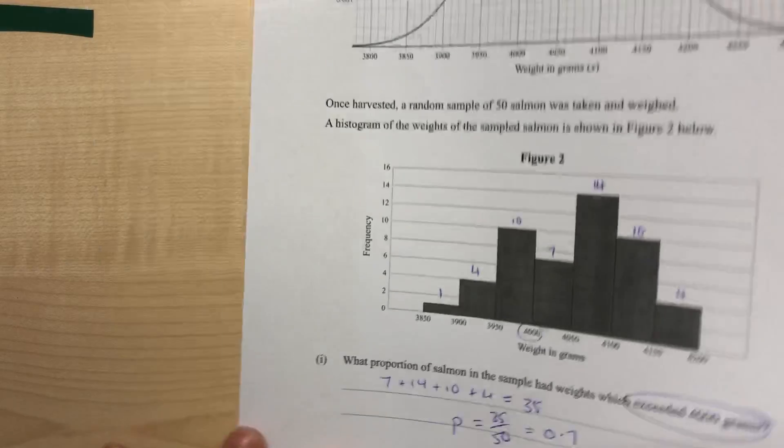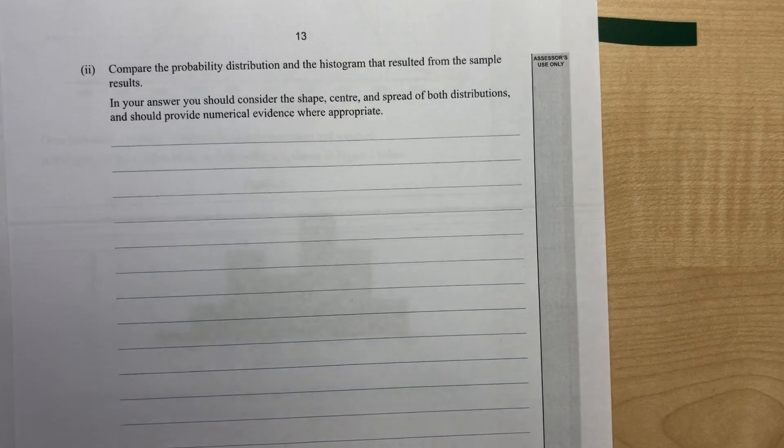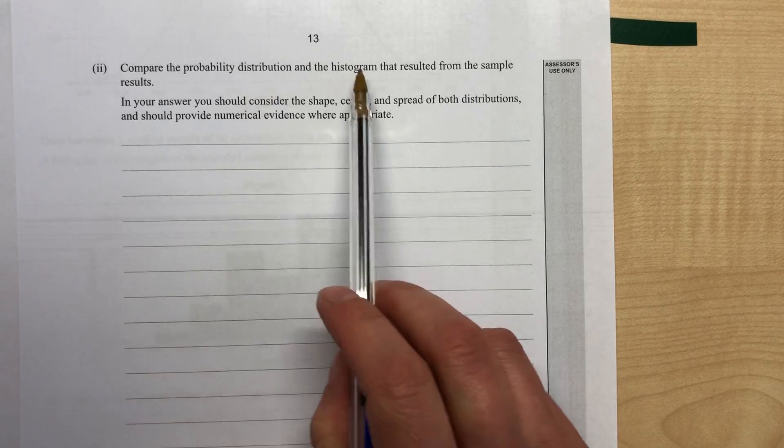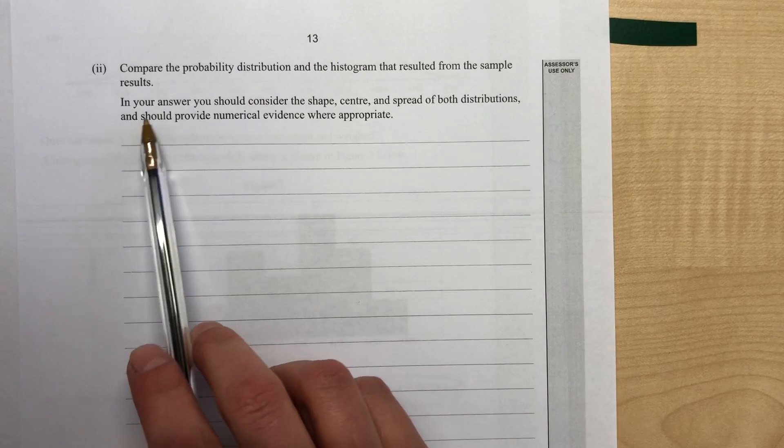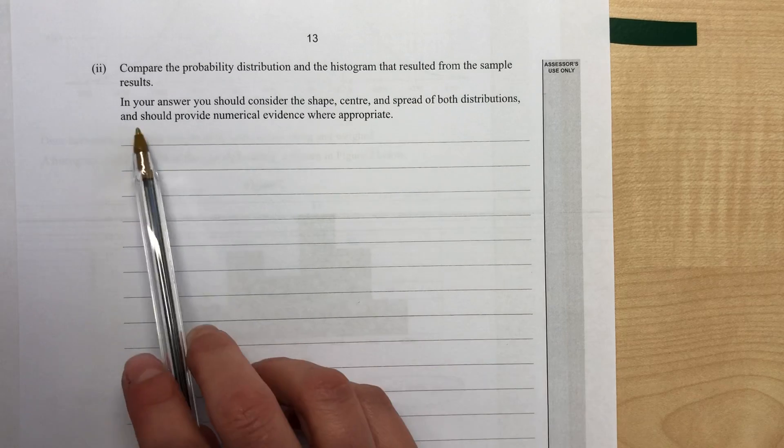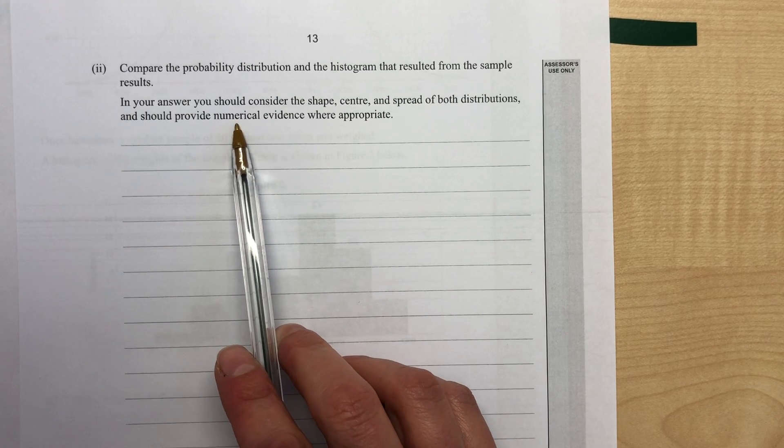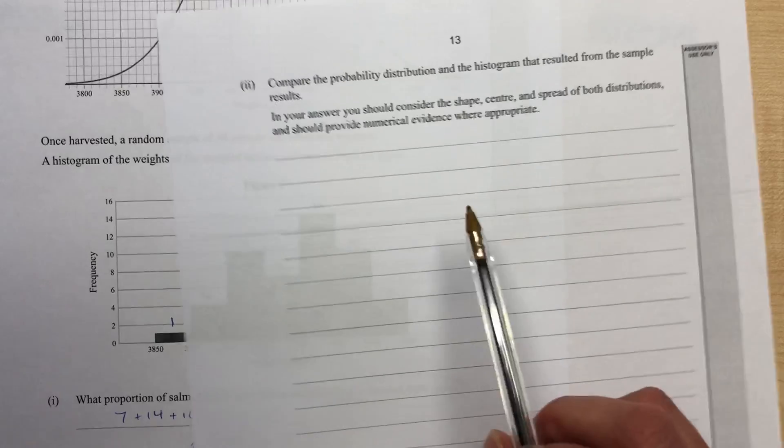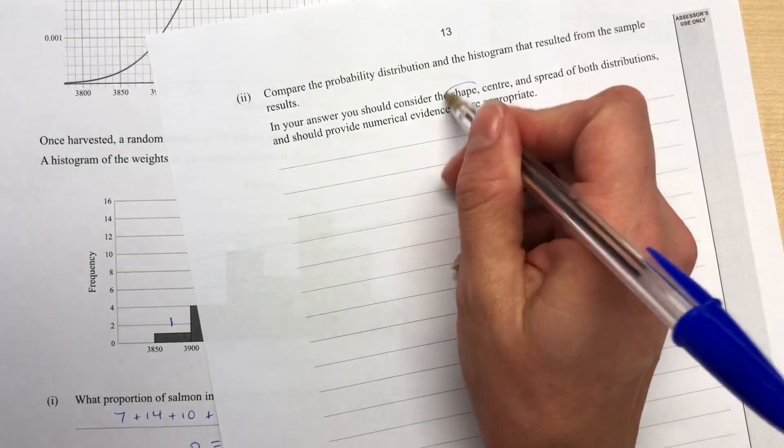Now the next page asks us to compare the probability distribution and the histogram. So our answer should consider the shape, centre, and spread of both distributions, and should provide numerical evidence, so we need to do some calculation on it as well.